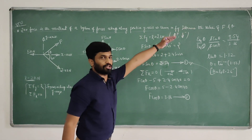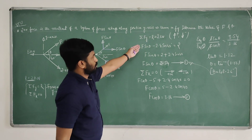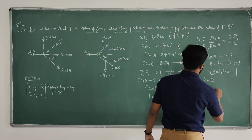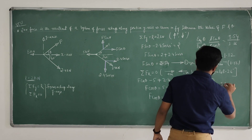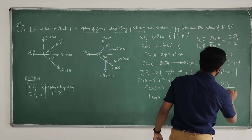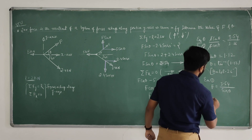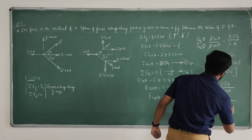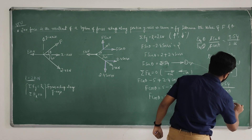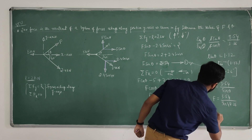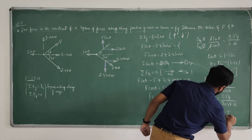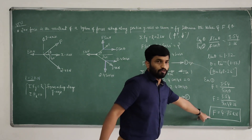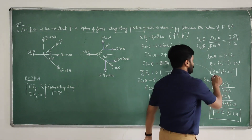Now substitute theta into equation number 1. From equation 1, F equals 3.54 divided by sin(48.26 degrees). The value of F is 4.75 kilonewton. This is the unknown force F and 48.26 degrees is its inclination.